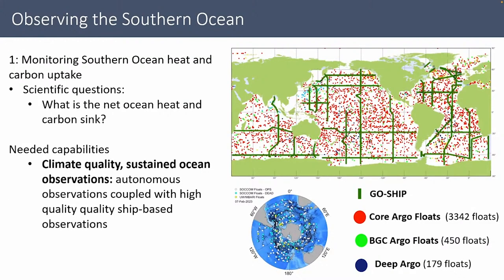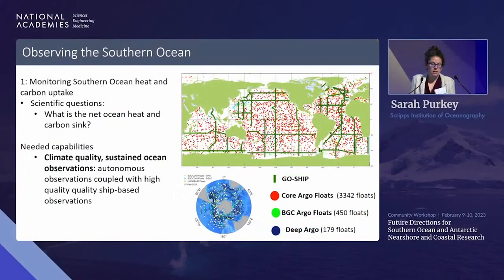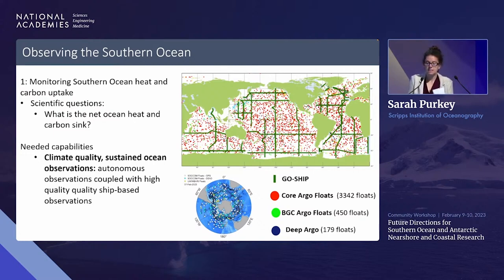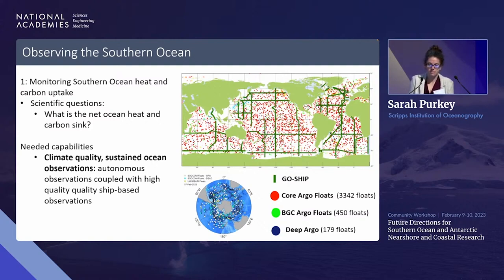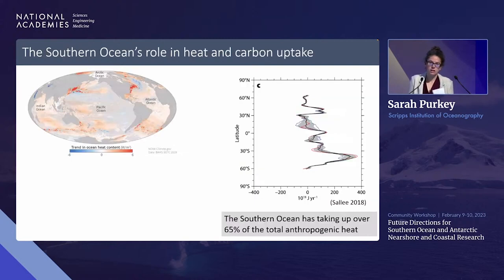Moving into observations and what I think we need moving forward: I divided this into two categories. The first is what we need to monitor Southern Ocean heat and carbon — specifically, what is the net ocean heat uptake and carbon sink from the Southern Ocean. To do this we need climate-quality data, meaning the highest accuracy, and we need sustained observations because this is a decadal signal, requiring a combination of autonomous and high-quality ship-based observations.